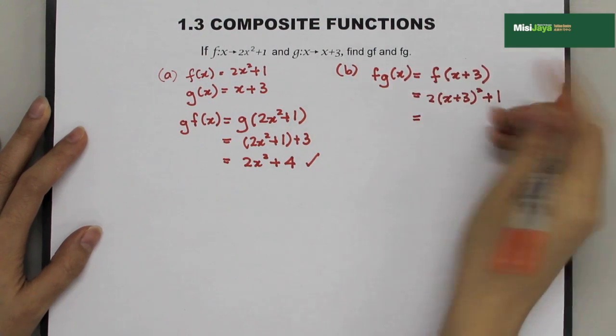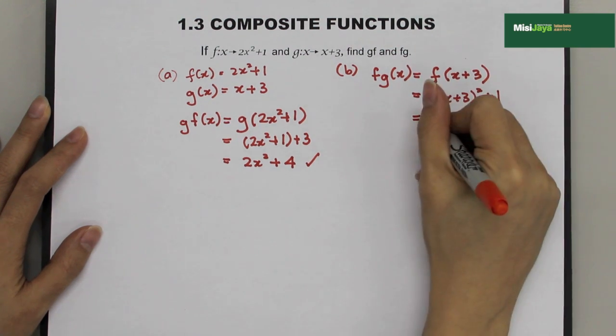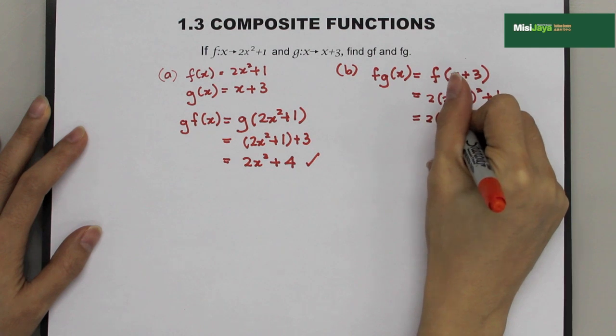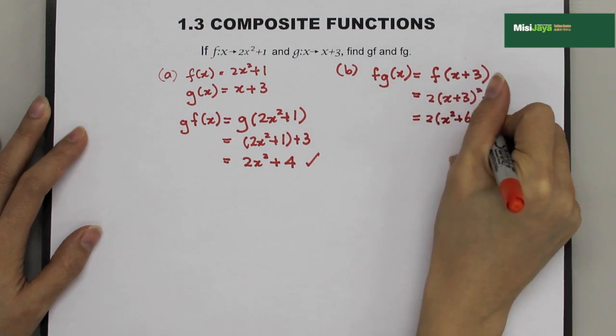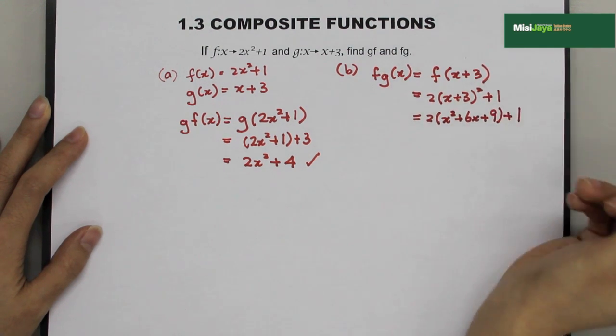So, now I'm going to open up this bracket. Expand this bracket. Becomes 2(x² + 6x + 9). Then, bring down the 1.